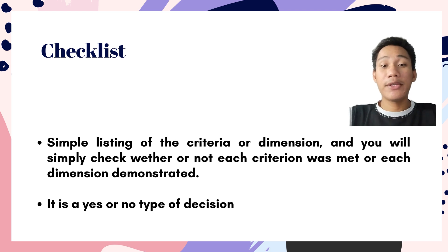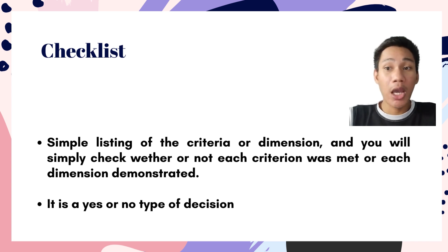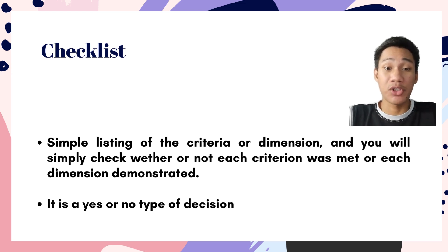To better understand, let's further discuss the types of criteria. First, we have a checklist. A checklist is a simple listing of the criteria or dimensions, and you will simply check whether or not each criterion was met or each dimension demonstrated.